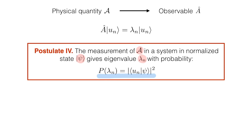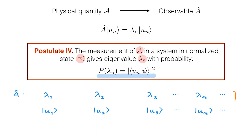So what does this mean? We've already discussed that for operator A, we have a list of eigenvalues λ1, λ2, λ3, and so on. Each of these eigenvalues corresponds to an eigenstate u1, u2, u3, and so on. And these two lists are always the same for operator A, and they are independent of the state of our system — they simply come from the eigenvalue equation of the operator.